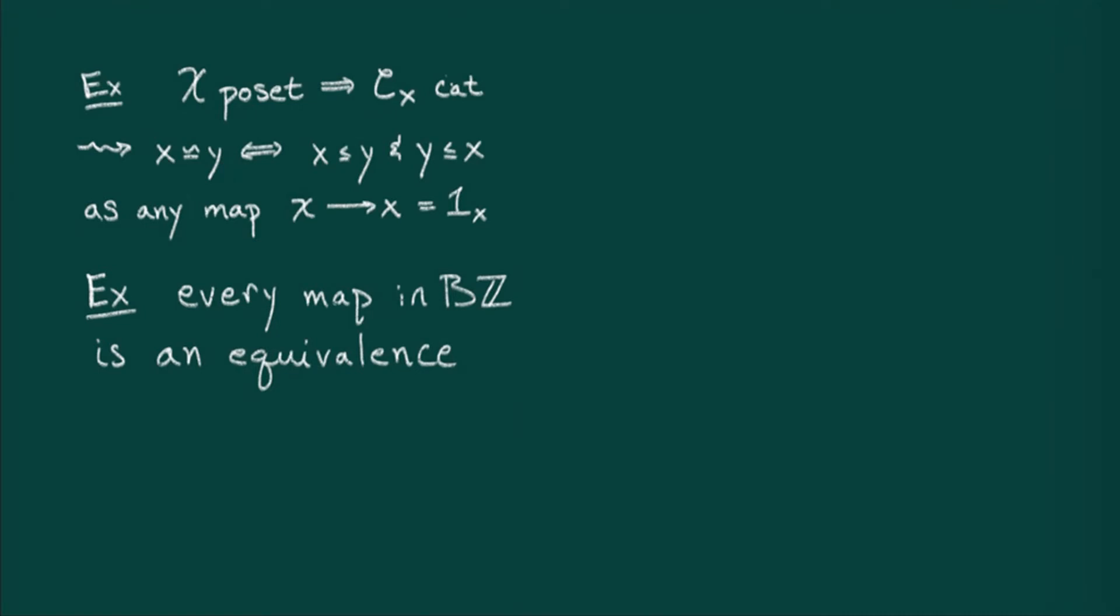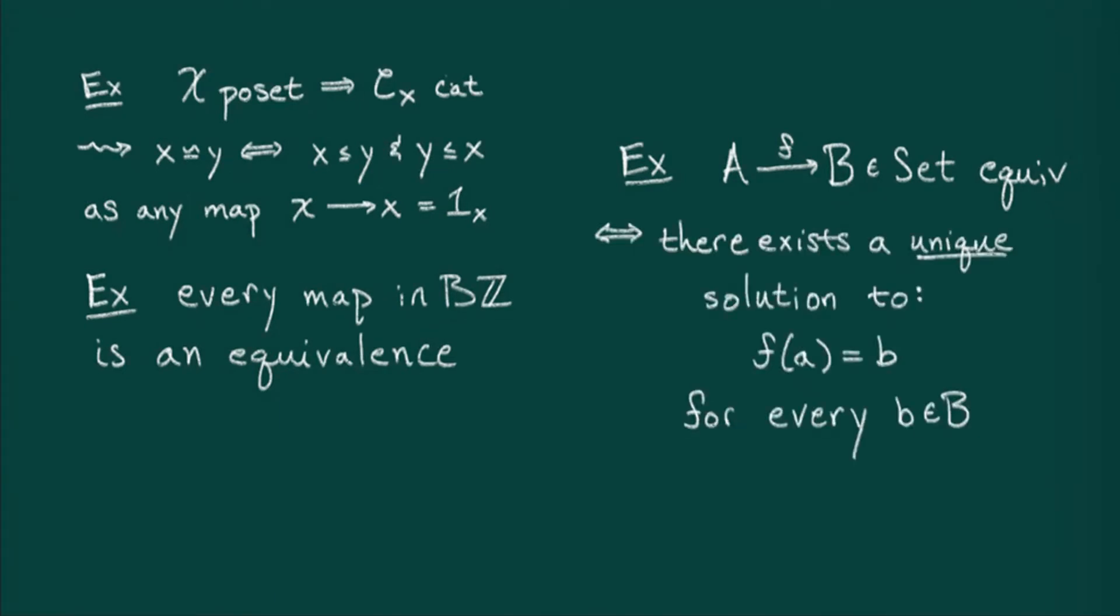For example, let's say I have a map between two sets a and b, which is an equivalence. I'll leave it as an exercise to show that for every b in b, we can always find a unique solution to the equation f of a equals b. In other words, an equivalence in sets is just a bijection.